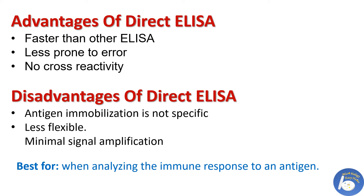What are the advantages of direct ELISA? Direct ELISA is faster than other ELISA techniques as it requires fewer steps. Because there are fewer steps, there may be less chance of errors which may occur during each step. Secondary antibody is not used in this type of ELISA, so there is no chance of cross-reactivity which may happen between primary antibody and secondary antibody.